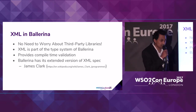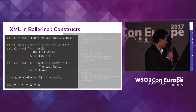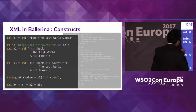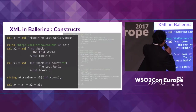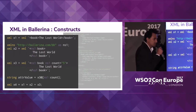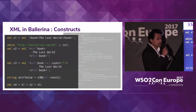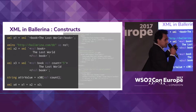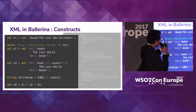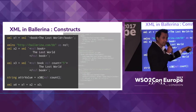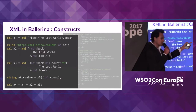Ballerina has its extended version of the XML specification. Here you can see how you can define an XML variable — so here is an XML literal and here is the XML variable. And here you can see how you can define namespaces. This is Ballerina's way of defining namespaces — here we have defined a namespace with a URI and its prefix is 'ns1'. In the second example, you can see that I have used this namespace within the variable.